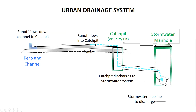The water flows along the channel to a catch pit or splay pit. Catch pits or splay pits have a grate on the top or in the side which allows the runoff to drop into the catch pit. From the catch pit the runoff flows into the stormwater system, which then conveys it to safe disposal in local streams or channels.